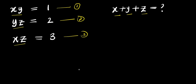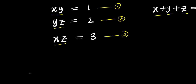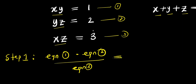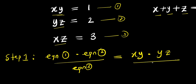So we are going to consider some steps right away. The first step will be: I can have equation 1 times equation 2, then this divided by equation 3. So what is equation 1? Equation 1 is x times y. Times equation 2, which is y times z.